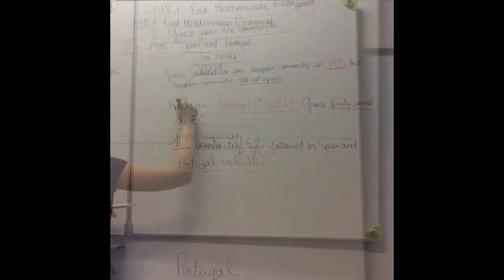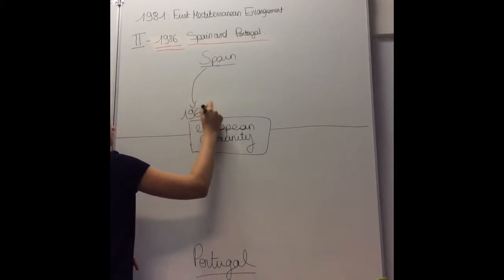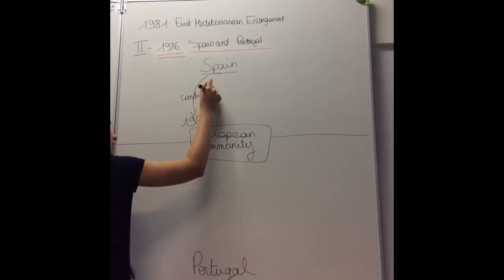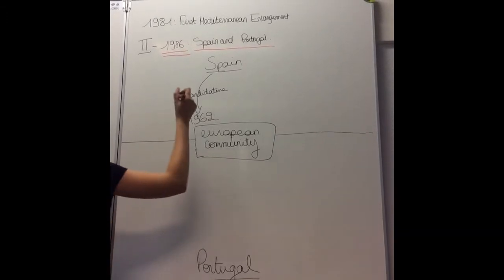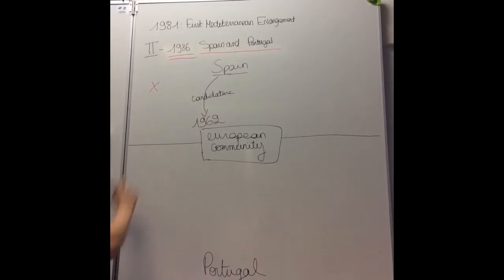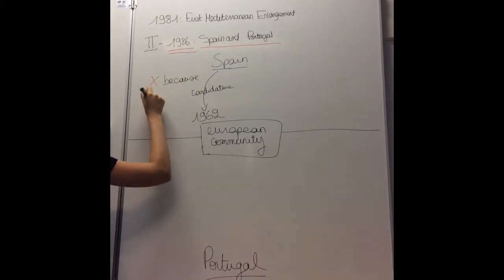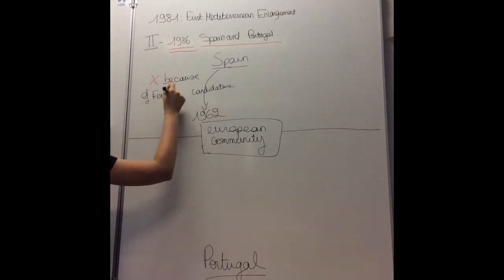Our second part is about 1986, Spain and Portugal. On January 1st, Spain and Portugal entered the European community, which later became the European Union. There are now 12 members. Spain made a first candidature in 1962 that was rejected because of the Francoist regime.